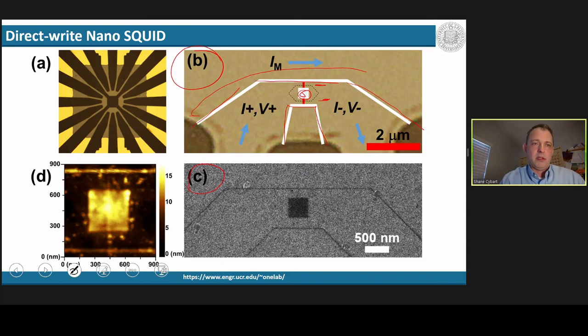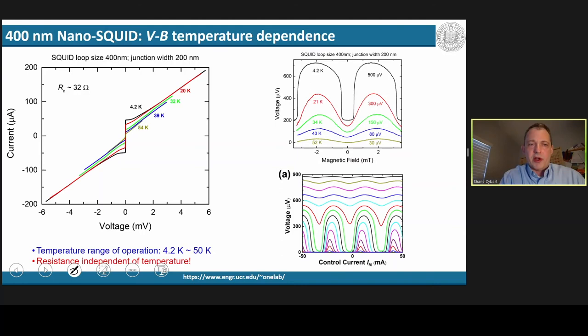Here I show the current voltage characteristics from 4.2 Kelvin to 54 Kelvin for one of these devices with an extremely high resistance of 32 ohms. This is close enough to match to room temperature electronics without any matching networks or transformers. This is also a way to increase the signal to noise ratio. Furthermore, that resistance doesn't change over the entire temperature range. So it works over 50 Kelvin range with zero change in resistance because we were able to tune it.